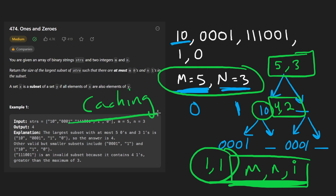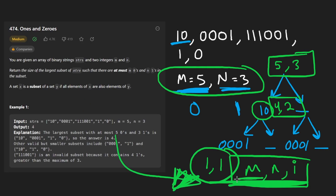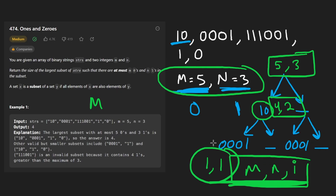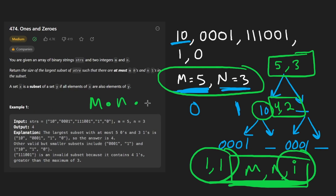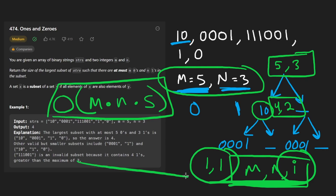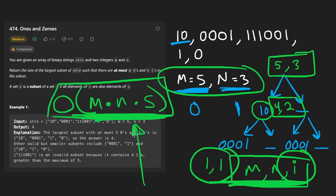We can use these three parameters to implement a dynamic programming technique called caching, or memoization. We calculate how many possible combinations there are: m possibilities for m, n possibilities for n, and s possibilities for i (the number of strings). So overall the function could be called m × n × s times. Every time we compute a value we cache it, so the time complexity equals the memory complexity: O(m × n × s).